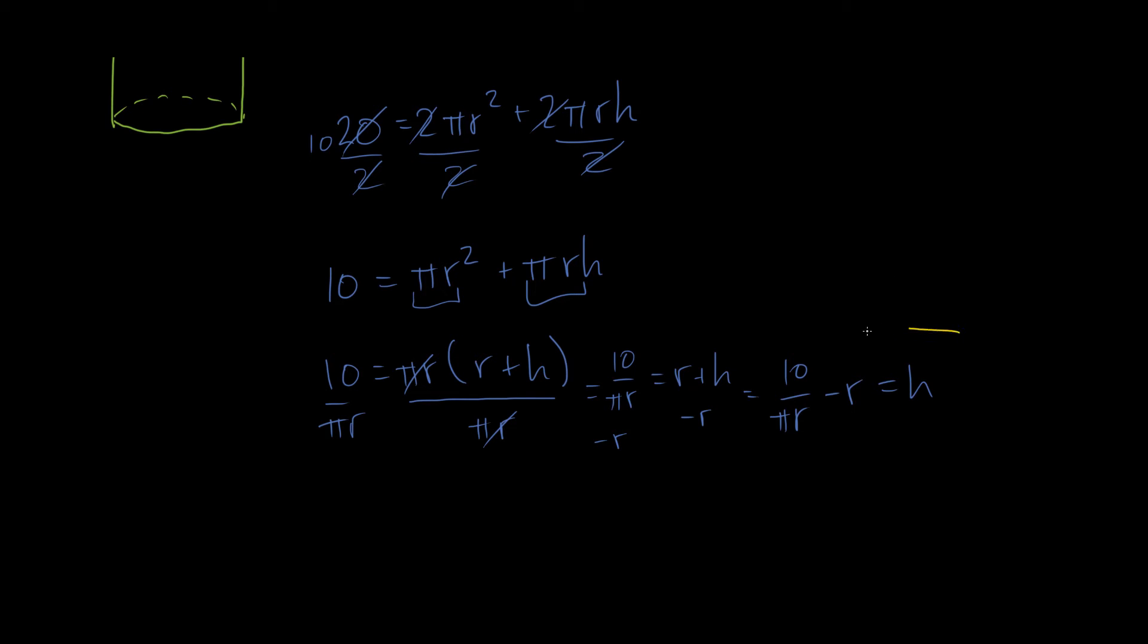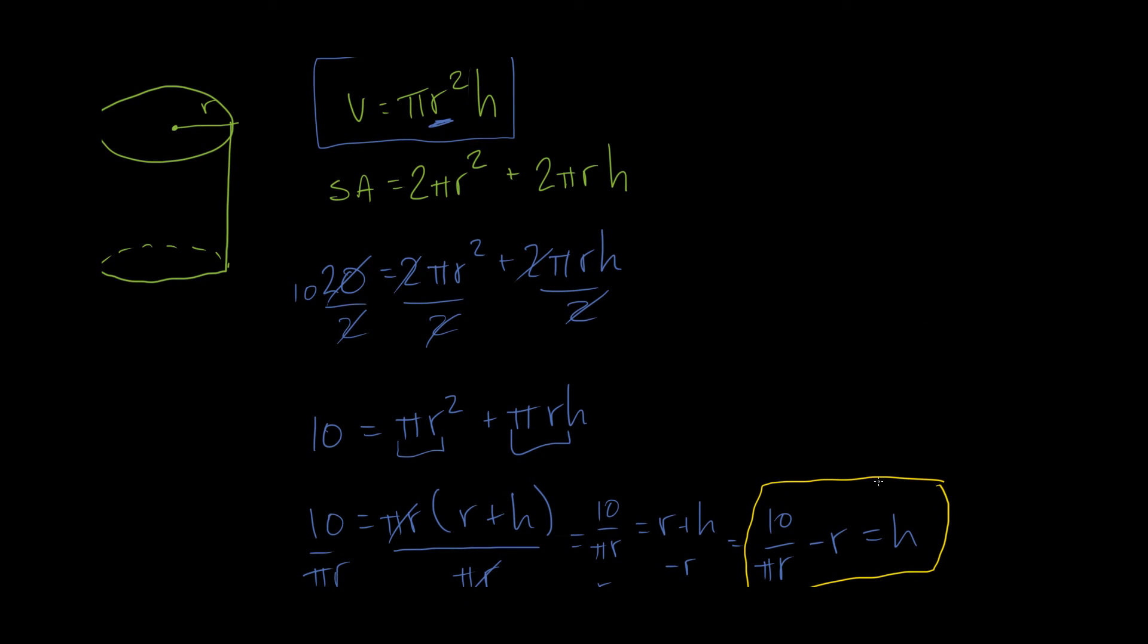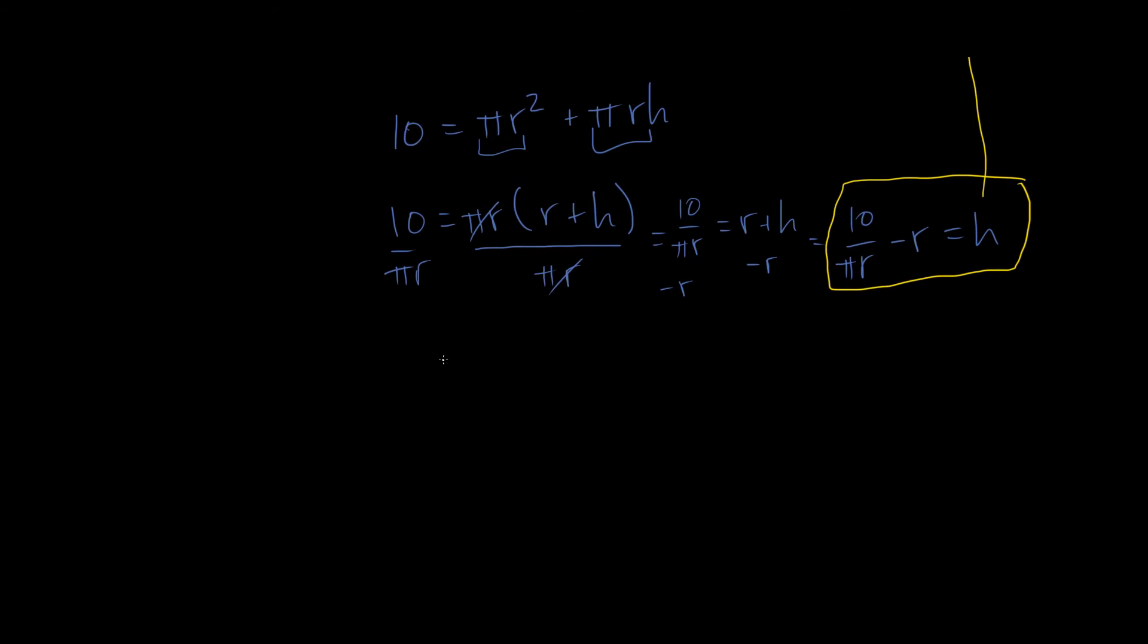Awesome. So now we have our equation for h. So now what I can do is actually I can take this h and just plug it in here. So let's do that. If originally I have v is equal to pi r squared h, now I'm going to rewrite it as v is equal to pi r squared times 10 over pi r minus r.